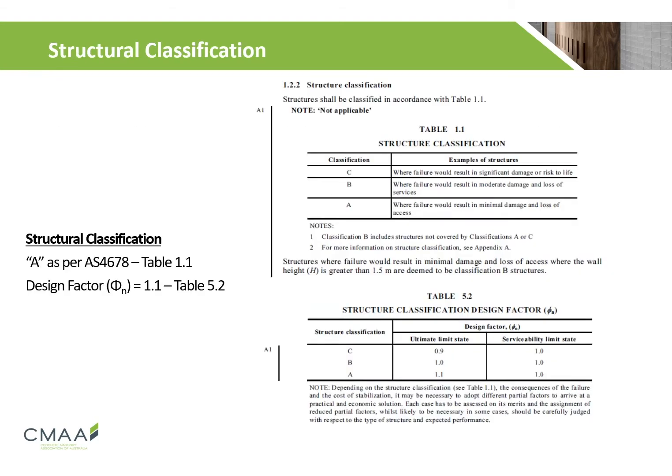From our example, we know that this retaining wall will be used in a garden, so we can safely say that the structural classification is A, from AS 4678 Table 1.1, where failure would result in minimal damage and loss of access. This correlates to our design factor obtained from AS 4678 Table 5.2, giving us a value of 1.1. More information can be found in AS 4678 Appendix A, Section A-3.